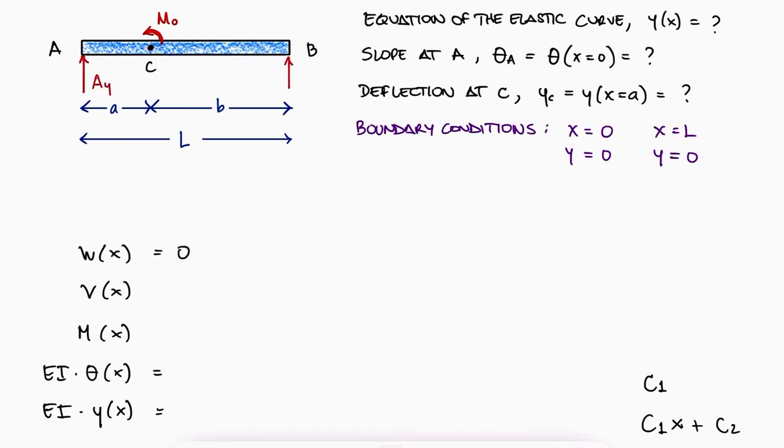With a free body diagram of the beam and the sum of moments about B, we find the value for the reaction at A. Just like during the example of the main video, we will not be needing the value for the reaction at B, since it won't affect the singularity function. You can check the link below if you have questions about that.